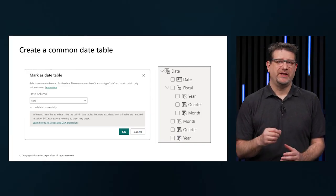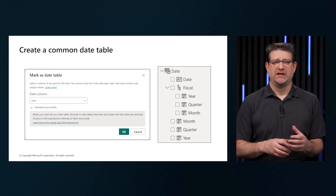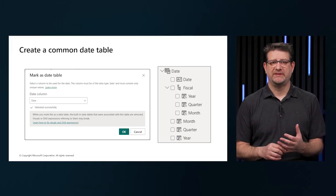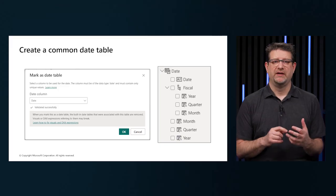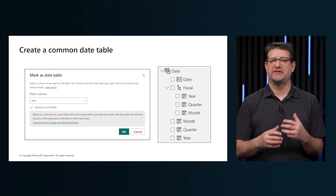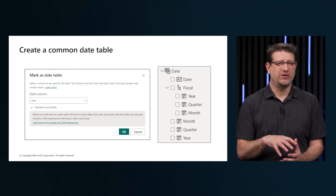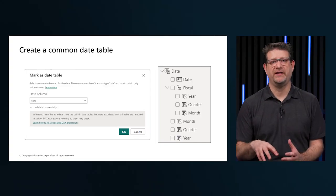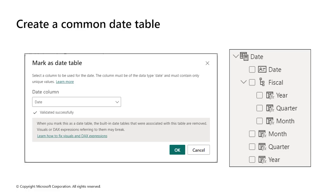We have three common ways to designate a date table in Power BI. First, source data — sometimes source databases or data warehouses already have their own date tables that we can use. Second, DAX functions — where we don't have an existing date table, we can use DAX functions like CALENDARAUTO or CALENDAR to generate one. Third, Power Query — we can use the M language in Power Query to define a common date table. To designate it as the official date table, right-click its name in the fields pane and select 'Mark as date table.'